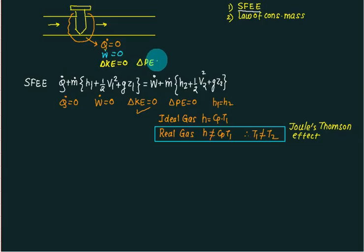If you write the first law, Q dot cancels with W dot, M dot cancels with M dot, velocity head is zero so that cancels, and potential head also cancels. You're left with h1 equal to h2. This is universally true whether it's an ideal gas or a real gas.